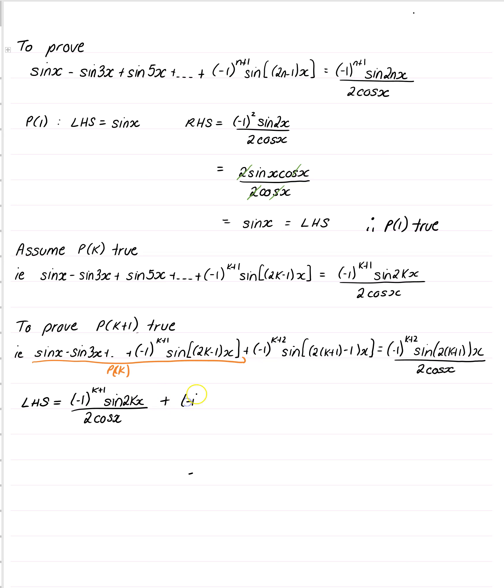which will be minus 1 to the k plus 2. 2k plus 2, what do we have? We've got sine. Now, this is 2k plus 2 take 1, so that's going to be 2k. 2 take 1 is 1 times x. So I've just tidied it up a bit.